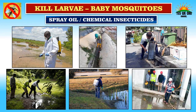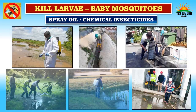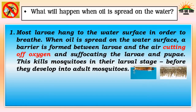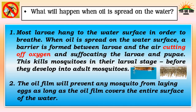The first step was to identify breeding places and prevent water logging, but water logging cannot always be controlled everywhere. So the next step is: if there is water logging, kill the larvae by spraying oil or chemical insecticides — in rice fields, drains, grassy ditches, and accumulated or flooded water. When oil is spread on the water surface, a barrier is formed between the larvae and the air, cutting off oxygen and suffocating the larvae and pupae. This kills mosquitoes in their larval stage before they develop into adults. The oil film also prevents mosquitoes from laying eggs.